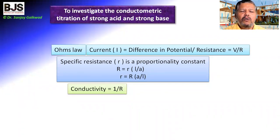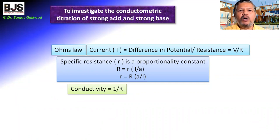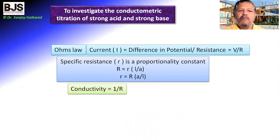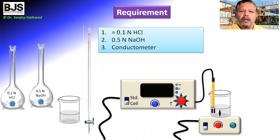For this purpose, we should know some basic laws related to the conductometer. That is Ohm's law: V equals IR. Conductance is the reciprocal of resistance. By applying this, we measure the resistance of the solution, from which we can calculate the conductance, and from that we can calculate the concentration of the solution.